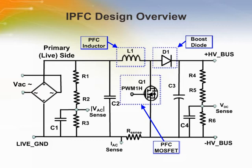The input rectified voltage VAC and the output DC voltage VDC are measured using resistor dividers, while the input current is measured using a shunt resistor. The role of the inductance in this power factor correction topology is essential — the physical size of the inductor increases with the power rating. Component size is one of the main reasons for implementing an interleaved power factor correction design.